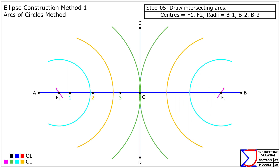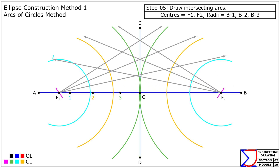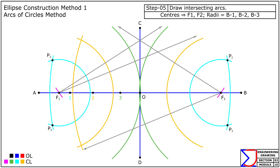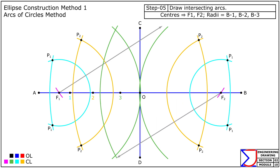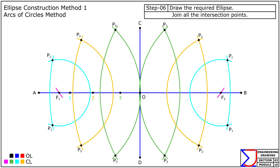Similarly, using radii B1, B2, B3, draw arcs from F1 and F2 to intersect the previous arcs. Finally, connect all the intersection points with a smooth continuous curve to complete the required ellipse.